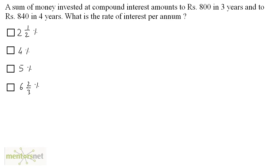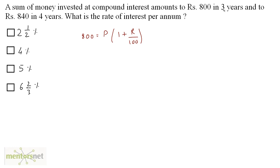A sum of money invested at compound interest amounts to Rs. 800 in 3 years and to Rs. 840 in 4 years. What is the rate of interest per annum? We know the formula for compound interest: A equals P into 1 plus r upon 100. In the first case, the amount is 800, equal to the principal P into 1 plus r upon 100, raised to 3 years. This is equation 1.